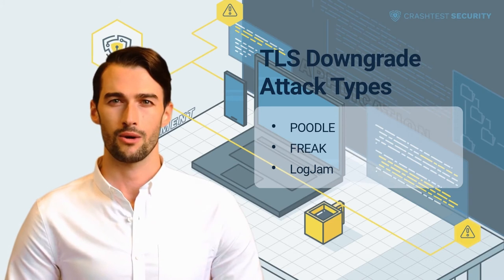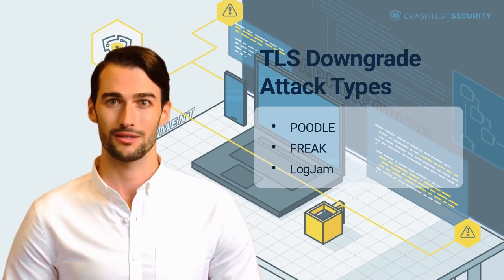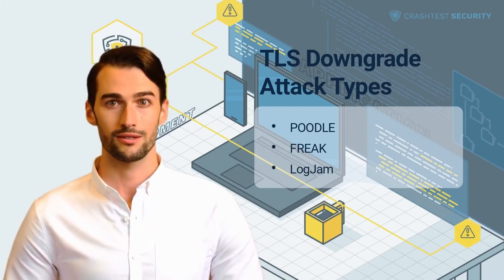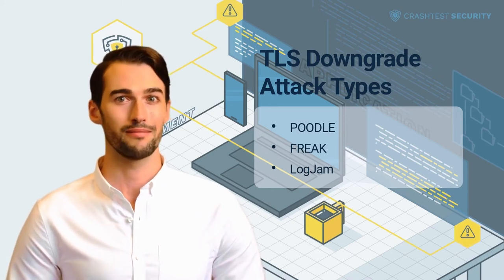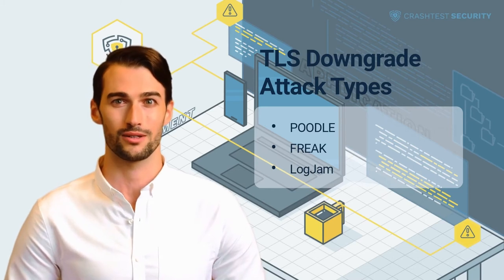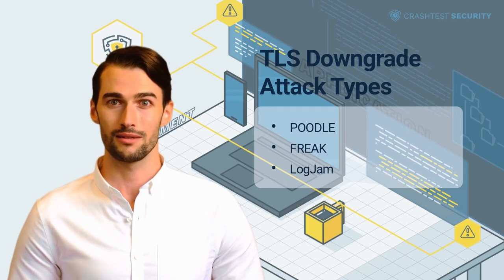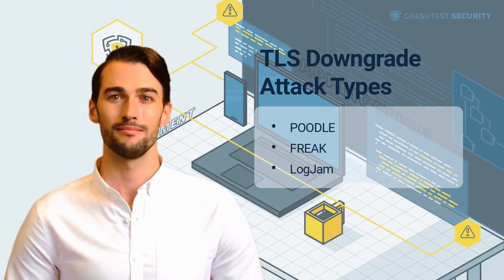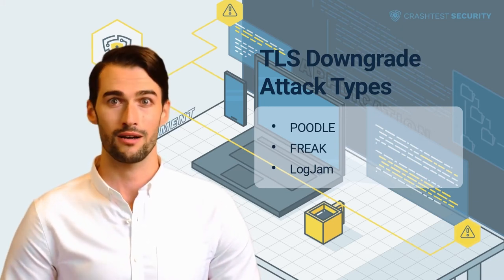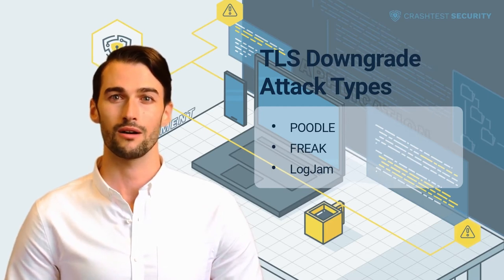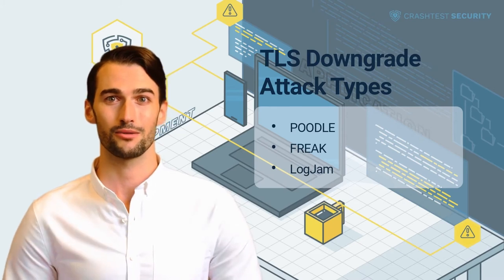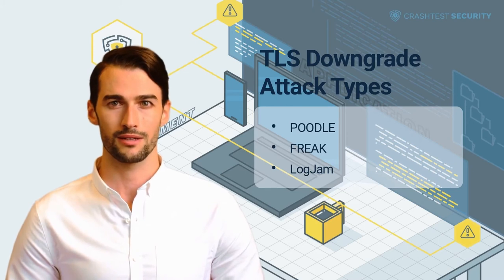POODLE: The POODLE attack — Padding Oracle On Downgraded Legacy Encryption — utilizes a protocol downgrade attack as part of its scenario. It relies on a MITM approach in which a user is tricked into running malicious JavaScript or another type of malicious code through their browser. Running the code allows the attacker to position themselves in the middle and begin sending requests to a server running TLS to establish a secure connection, then drop these attempts. If the server supports SSL due to backward compatibility, it will interpret unsuccessful connection attempts as a cue to switch to SSL 3.0 instead of TLS. Once downgraded, the attacker exploits a vulnerability in the cipher block chaining mode of encryption used in SSL 3.0, sending requests with varying input to the server and monitoring responses to slowly reveal the encrypted contents of the ciphertext. This exposes the session cookie, hijacks a user's session, and possibly steals their credentials and data.